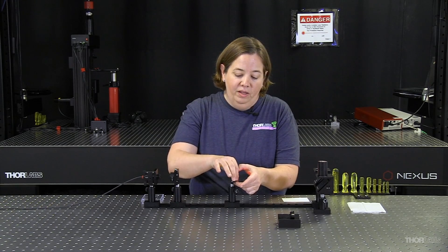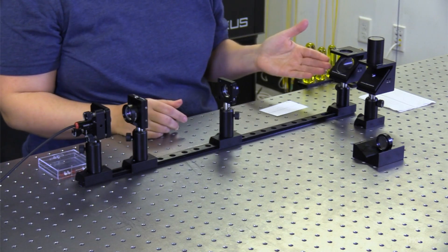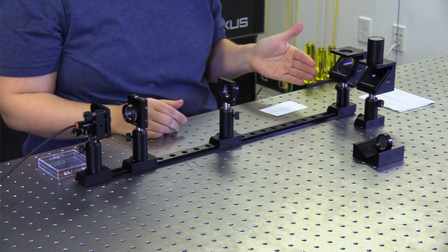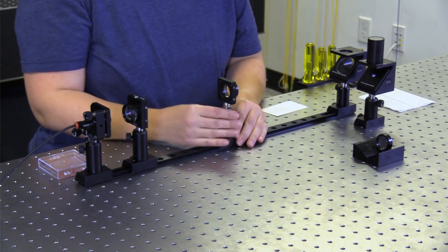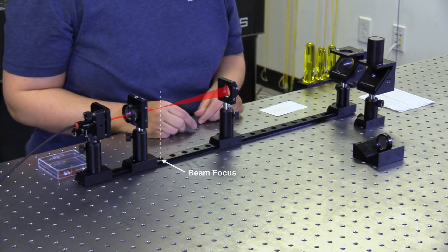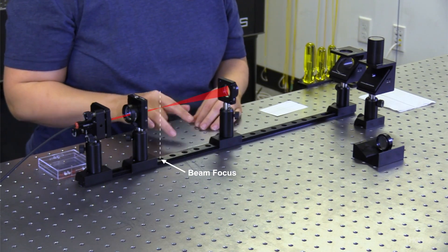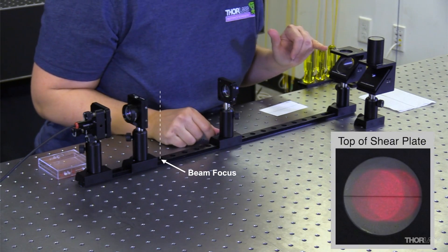I'm also using my larger shear plate for measuring the collimation of a larger beam. So I've just put this in randomly. This is not in the right position and I'm actually pretty close to the focus. So if I look at my shearing interferometer, I do see two circles.